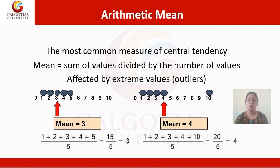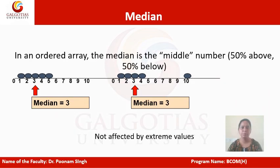Next we have the median. In an ordered array, the median is the middle number — the middle value in a given data set. We always refer to it as a median: 50% above and 50% below. For example, with values 1, 2, 3, 4, and 5, the median is 3, because 1 and 2 are 50% below and 4 and 5 are 50% above.